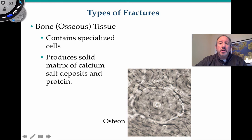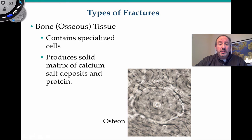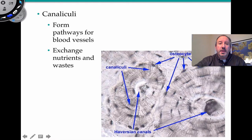I wanted to talk first about some osseous tissue, in other words, bone tissue. I think it's fruitful to review some of this microscopic structure of bone tissue in order to fully appreciate what happens during fracture and during repair. As you can see here in compact bone under the light microscope, you see these concentric rings — it sort of looks like wood. These units right here are called osteons, and they're basically pretty solid and strong tissue.